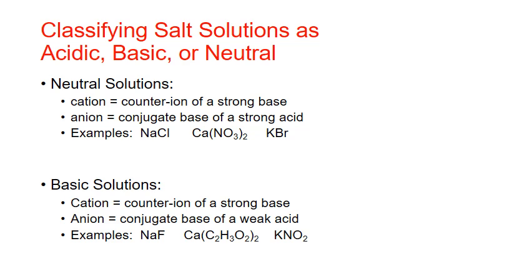Whether or not a salt solution is acidic, basic, or neutral ultimately depends on the combination of both the cation and the anion. A neutral solution results when the salt is made up of a cation that is the counter ion of a strong base, and an anion that is the conjugate base of a strong acid. Sodium chloride is a classic example — sodium is the counter ion of the strong base sodium hydroxide, while chloride is the conjugate base of the strong acid hydrochloric acid. Neither the cation nor anion has appreciable strength as an acid or base, and the solution is neutral overall. Other examples include calcium nitrate and potassium bromide.